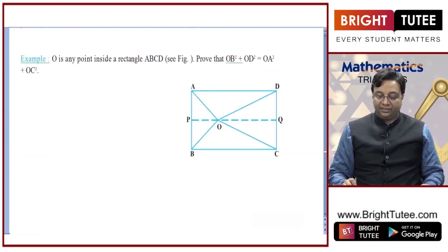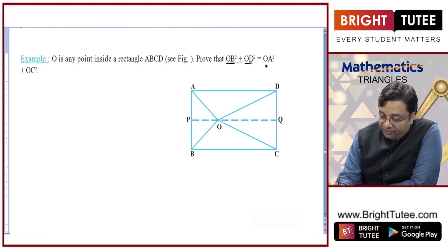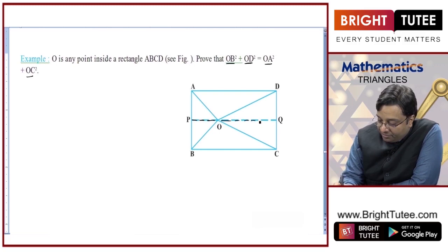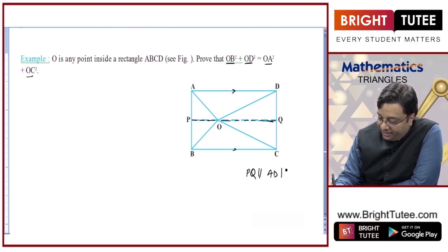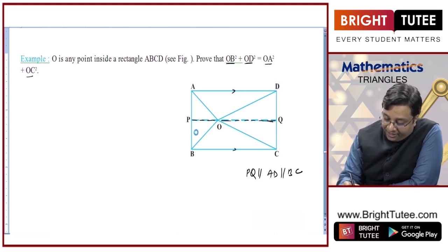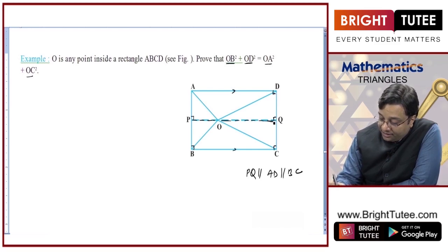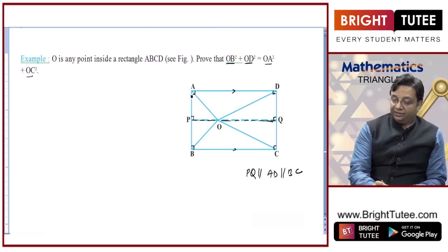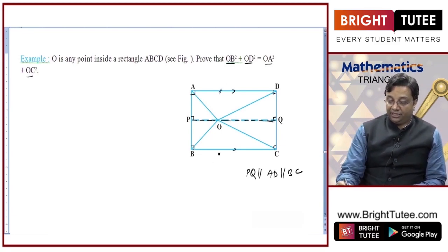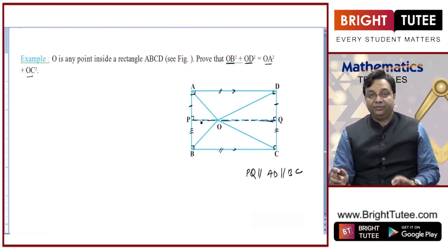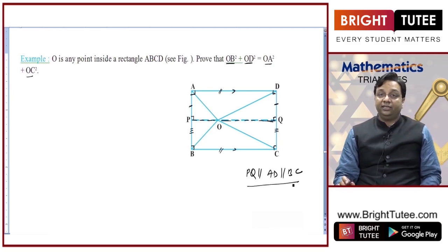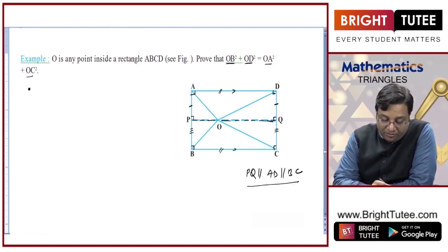O is any point inside rectangle ABCD. We need to prove OB² + OD² = OA² + OC². The construction is to draw PQ parallel to AD and BC. This makes APQD and BPQC also rectangles, all angles are 90 degrees, and opposite sides of the rectangles are equal. Then we apply Pythagoras theorem.